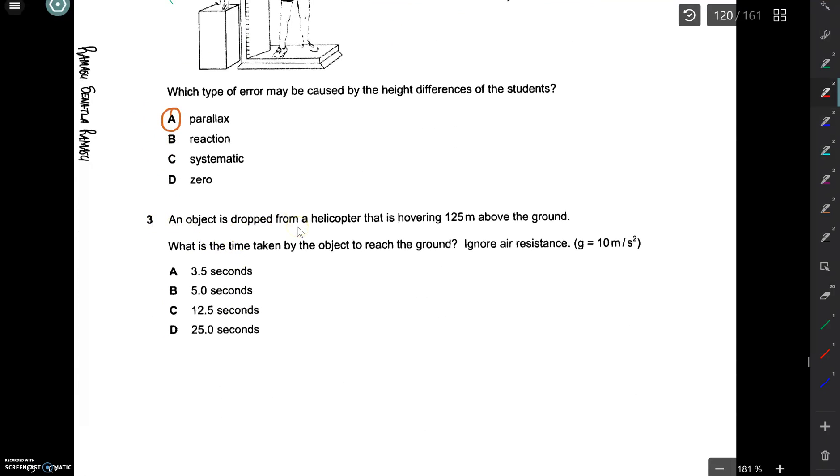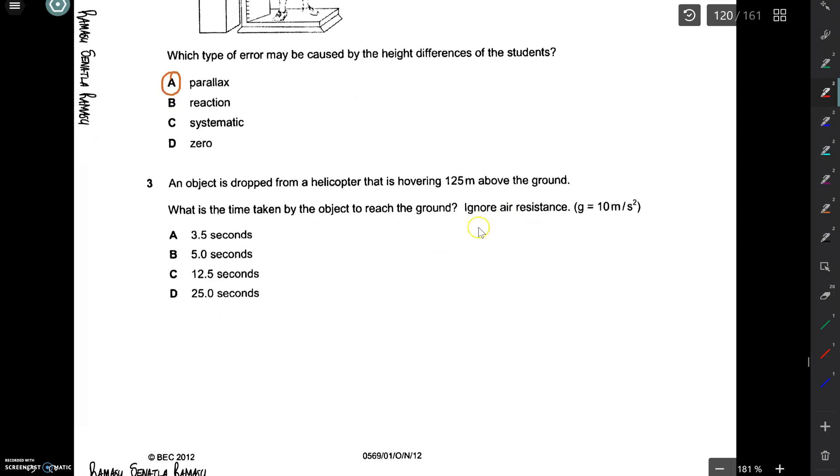Part 3 says, an object is dropped from a helicopter that is hovering 125 meters above the ground. What is the time taken by the object to reach the ground? Ignore air resistance. So this is a SUVAT question.